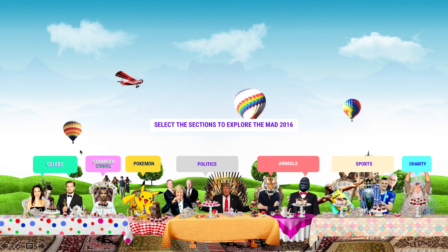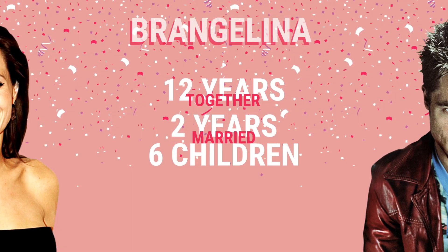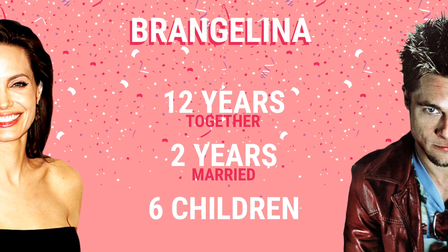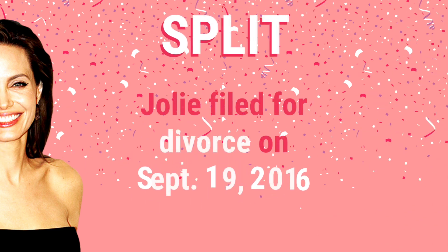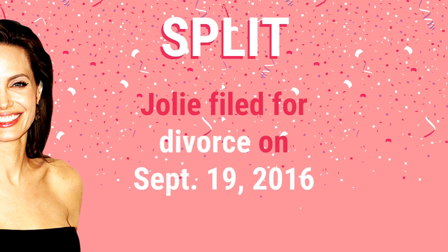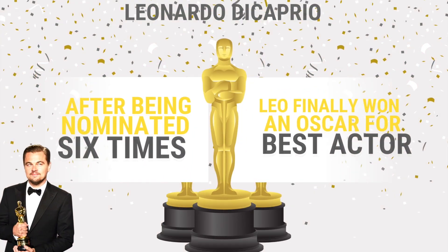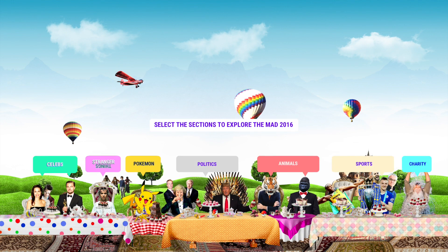Let's take a look at the PowerPoint version first. Here you can see I'm using my mouse to click into the different sections of the presentation. Once we're in a different section — this particular one is about celebrities — we can then just use the mouse to click and go through the content, or use the right arrow on our keyboards.